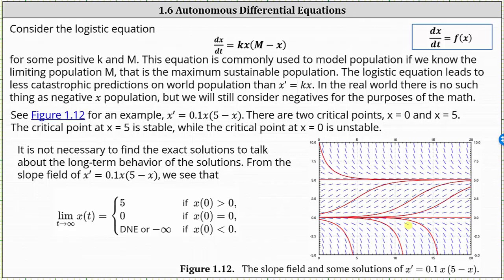Analyzing the graph, notice we have two critical points: at x equals 0 and at x equals 5, which correspond to the horizontal constant solution lines. The critical point at x equals 5 is stable because if we start with x values a little more than 5 or less than 5, as t approaches infinity, x of t still approaches 5. However, the critical point at x equals 0 is unstable. If we start with an x value a little more than 0, x of t approaches 5, not 0. And if we start with an x value less than 0, x of t decreases without bound.